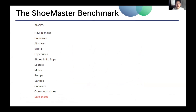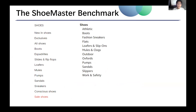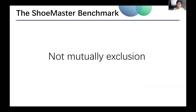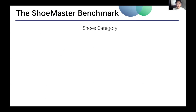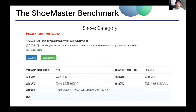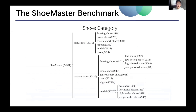In shoe classification, the current e-commerce platforms such as Farfetch, Amazon, eBay, and Taobao are not complete and mutually exclusive. So we proposed Shoemaster. This is a category hierarchy. We built this daily shoe category hierarchy by referring to e-commerce platforms and China's national standard. We classified daily shoes into men's shoes and women's shoes, and then classified them into six different categories according to style.